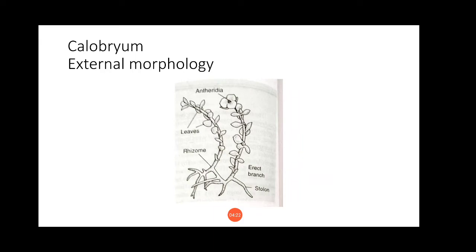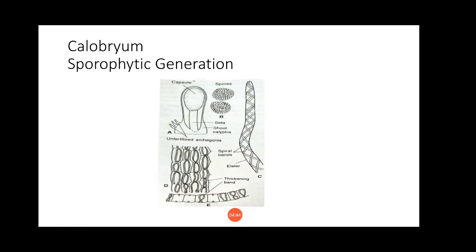You can see the rhizome which is underground, and from the rhizome arise the erect branches. Leaves are isophyllous and anisophyllous and they are without a midrib. Now let us begin with the sporophytic generation of Calobryales.